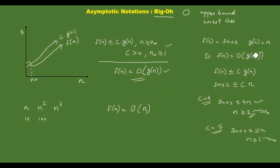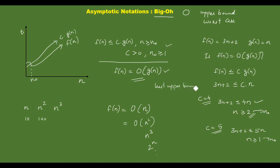Asymptotically, f of n is upper bounded by n. f is also upper bounded by n squared, also upper bounded by n cubed, and also upper bounded by 2 raised to n. We have to select the least upper bound — that is, the tightest upper bound. Big O notation represents the tightest upper bound.